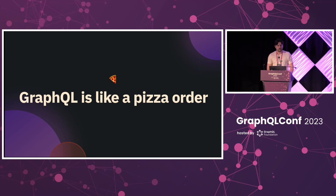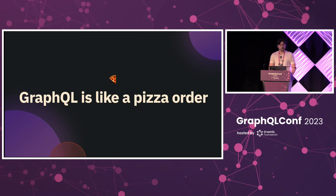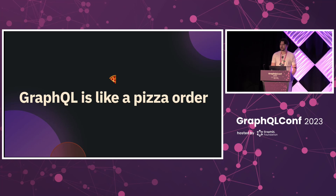Imagine ordering a pizza. You call and you ask for a pizza with special toppings. Then the person on the other side takes the order and tells the pizza chef exactly what to make. Well, GraphQL is kind of like that order. Except instead of ordering pizza, you ask the server for some data, and instead of speaking to a person, you're sending a specially formatted message to the server called a GraphQL query. Just like you ask for specific toppings, you ask for specific data from the server. And just like the pizza chef makes your pizza with the exact toppings, the server responds with the exact data you requested.